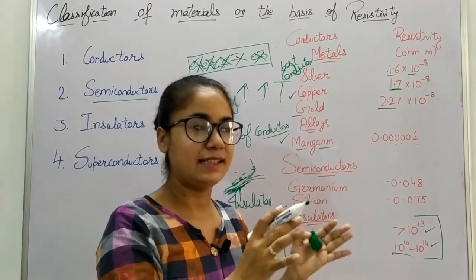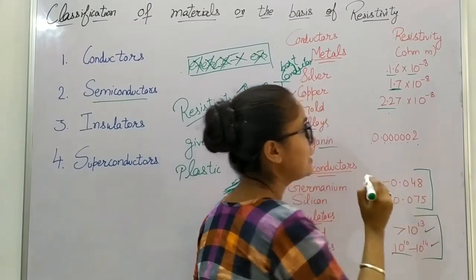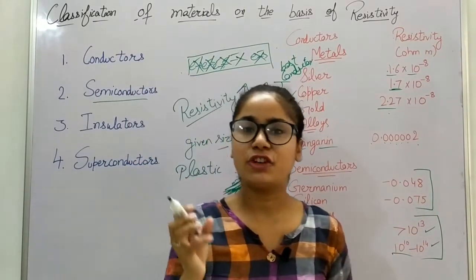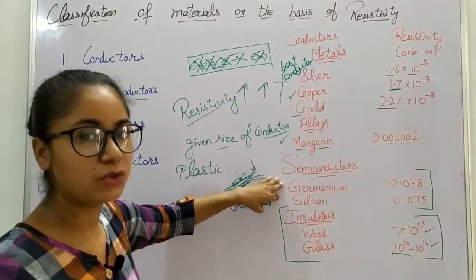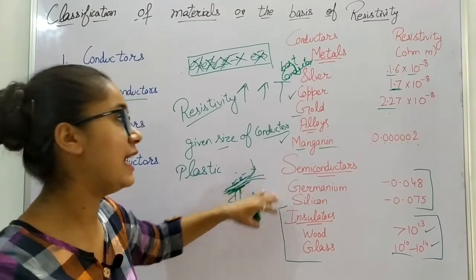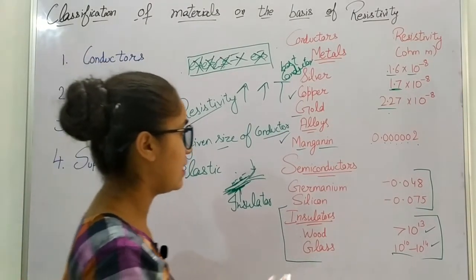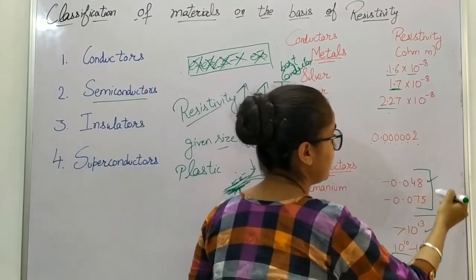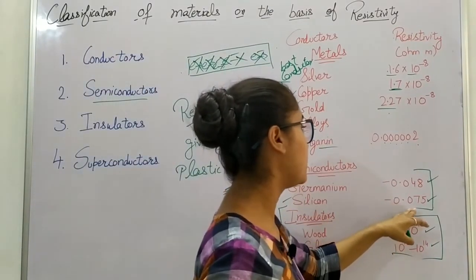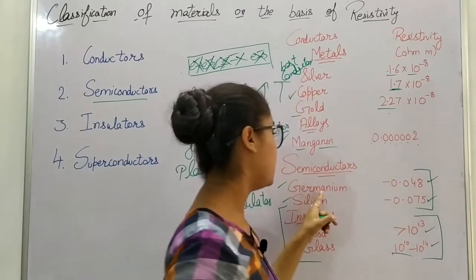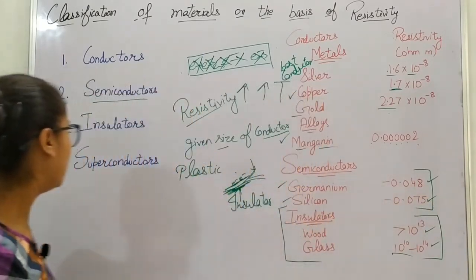Now let's talk about semiconductors. Semiconductors behave like both insulators and conductors — they lie in between, because their resistivity lies between that of insulators and conductors. There are very few materials in the periodic table that behave like semiconductors, because they have fewer free electrons compared to conductors. The materials used as semiconductors are germanium and silicon. Silicon has a resistivity of 0.075 ohm·meter and germanium has a resistivity of 0.048 ohm·meter.